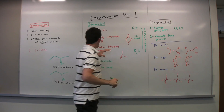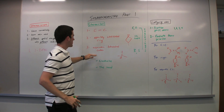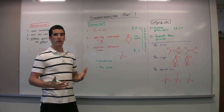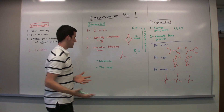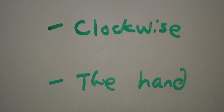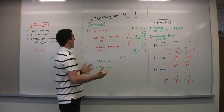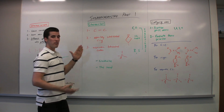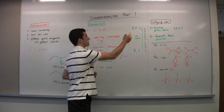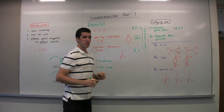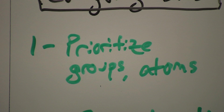I'm going to focus on the asymmetric tetrahedral carbon because there are two ways to find what the stereo label is: the clockwise method or the hand method. So how do we find out what stereo label they get? That's when we configure these sites, and there are two steps. One is how you prioritize groups and atoms — giving them the numbers one, two, three, or four.